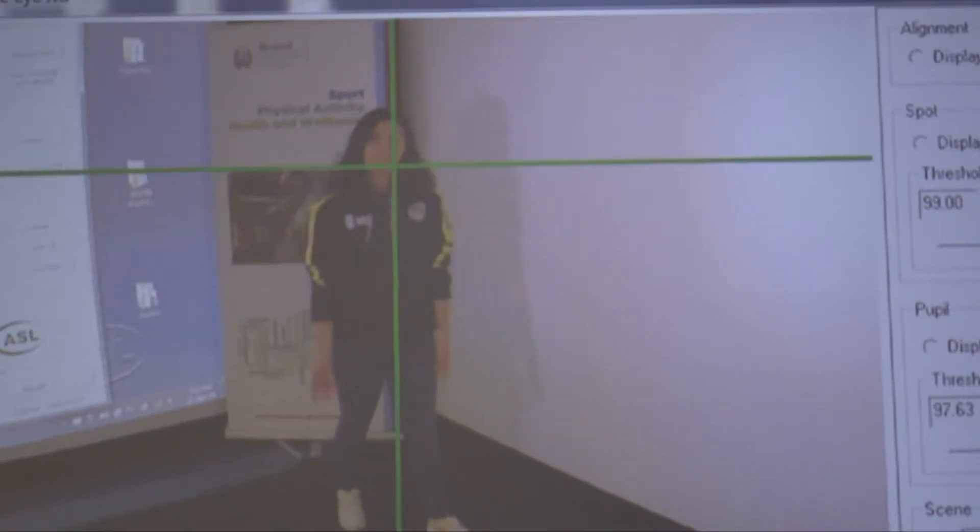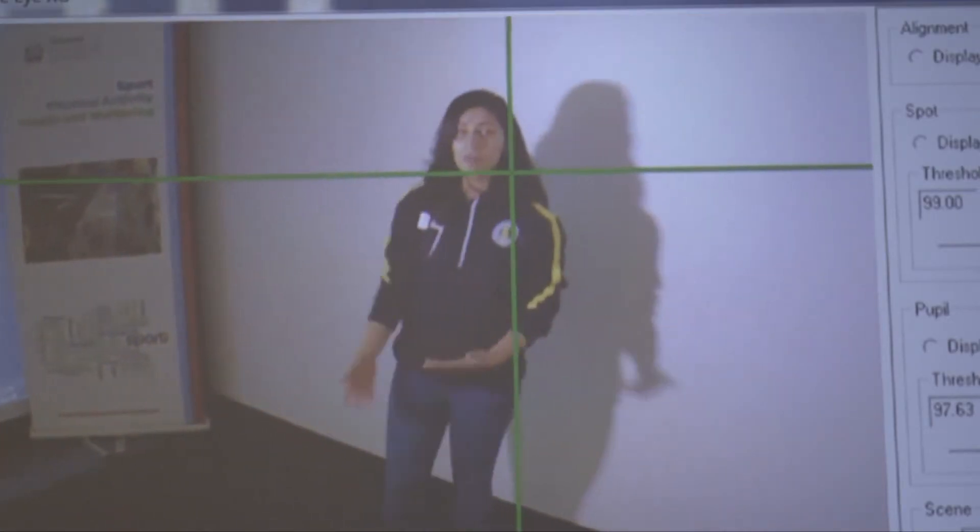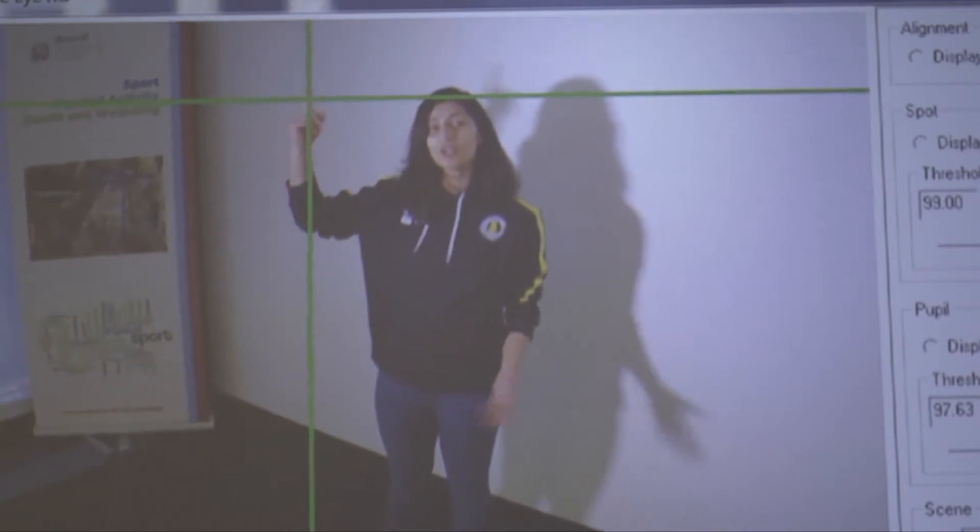The software creates a crosshair which allows us to see what the athlete is looking at. So for example, if I put my finger up and ask the athlete to look at my finger, the crosshair will move across.